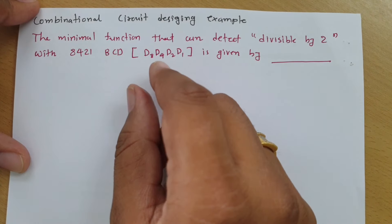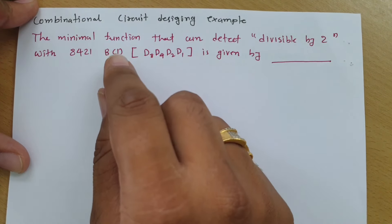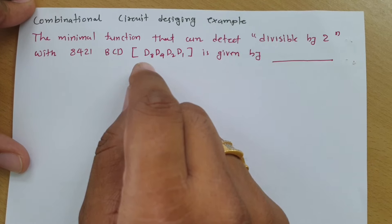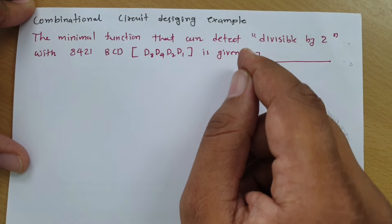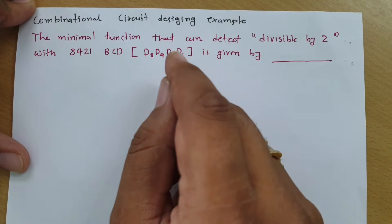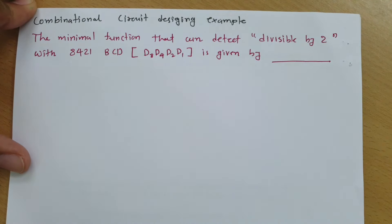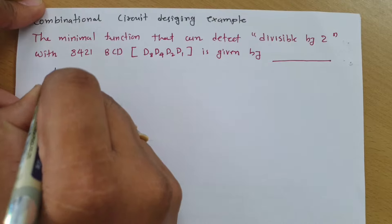Our agenda is to identify a function which will detect divisibility by 2 using the 8421 BCD code. We have BCD code as input and we need to identify a function that provides an output indicating whether the BCD input is divisible by 2. First, I will write the 8421 BCD code.